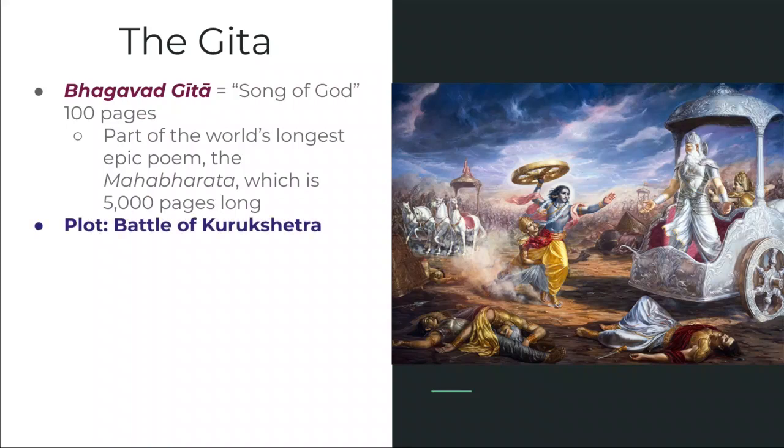The basic plot of the Bhagavad Gita is the battle of Kurukshetra, where two parts of the same family are about to engage in battle against one another. The Pandavas are meant to represent good, while the Kauravas are meant to represent evil — they have enslaved a number of people and violated certain treaties with the Pandavas. Because of the Pandavas' inability to achieve peace, it has culminated in this final battle between good and evil. But if you remember from our introduction, good and evil — that form of dualism — is part of maya, which is an illusion.